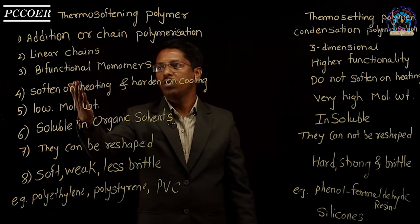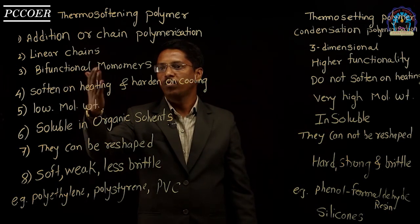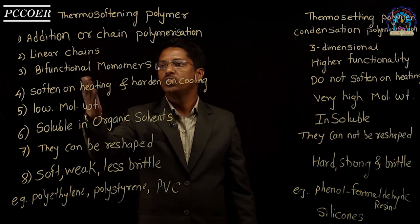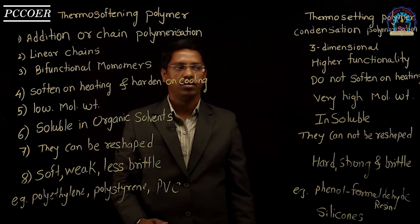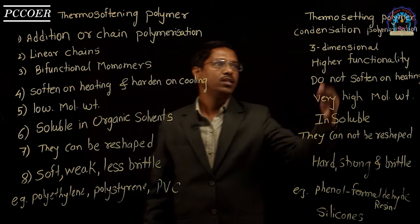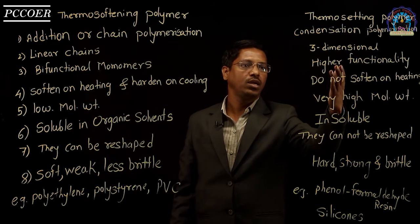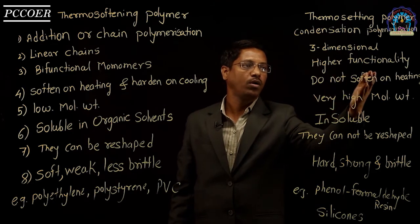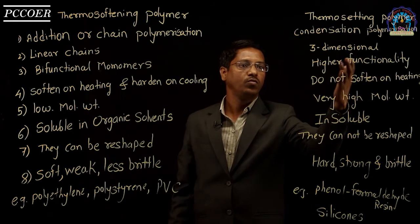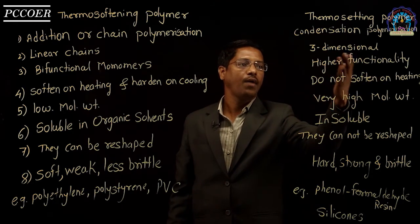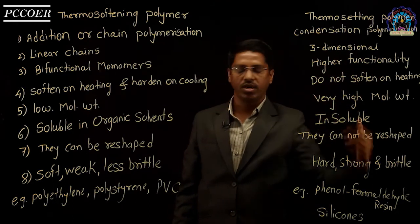Third difference: thermosoftening polymers are formed from monomers which are generally bifunctional, while thermosetting polymers are generally formed from monomers which have a higher functionality.